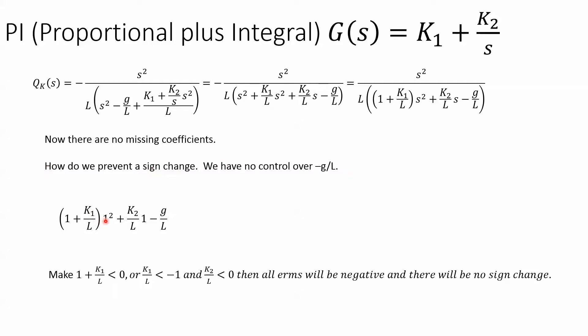How do I prevent a sign change? Well, 1² is still 1. What if I made these two both negative? It would be negative, negative, negative—no sign change. How do I make that? Make (1 + K₁/L) < 0, or K₁/L < -1, and K₂ < 0. Then all terms will be negative and there will be no sign change.